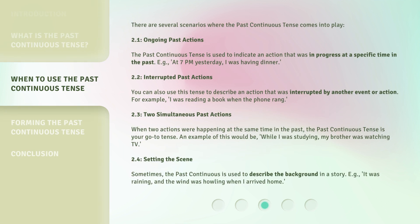There are several scenarios where the Past Continuous Tense comes into play. 2.1: Ongoing Past Actions. The Past Continuous Tense is used to indicate an action that was in progress at a specific time in the past. For example, at 7 p.m. yesterday, I was having dinner.